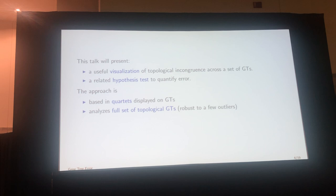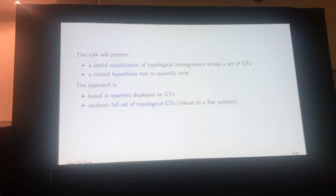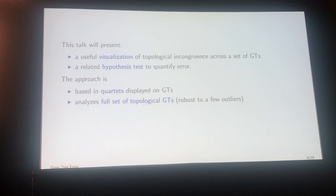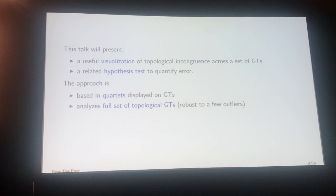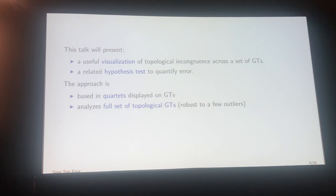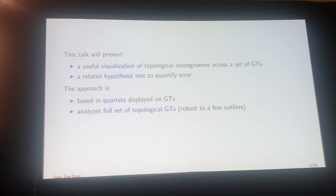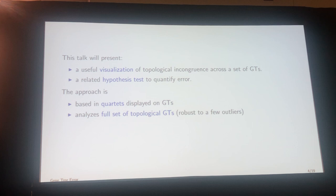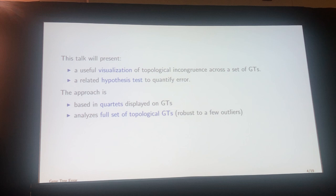In this talk I want to present two things. One is a visualization technique where you can look at a collection of gene trees and get some real, informal, intuitive understanding of what the topological incongruence between those gene trees is telling you. There's also a formal statistical hypothesis test that goes with it. The overall approach is looking at quartets displayed on the gene trees — I'm looking at the mass of gene trees together, comparing them all, and the approach is robust if you have a few poorly behaved outlier gene trees.